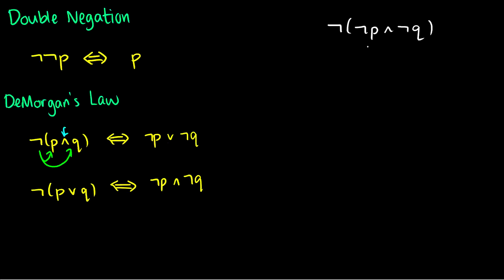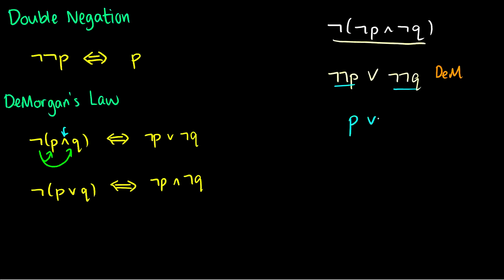Let's simplify NOT(NOT p AND NOT q). First, apply De Morgan's law on the entire thing — distribute the negation to NOT p and NOT q, which gives NOT(NOT p) OR NOT(NOT q). Then by double negation, NOT NOT p becomes p and NOT NOT q becomes q, so we end up with p OR q.